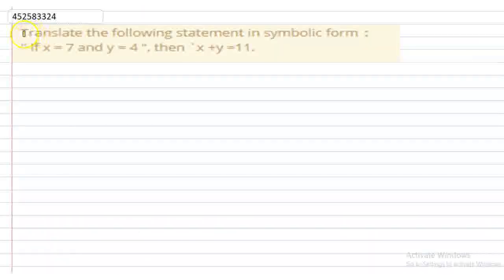Hello guys! Today we have to translate the following statement in a symbolic form. If x equals 7 and y equals 4, then x plus y equals 11.